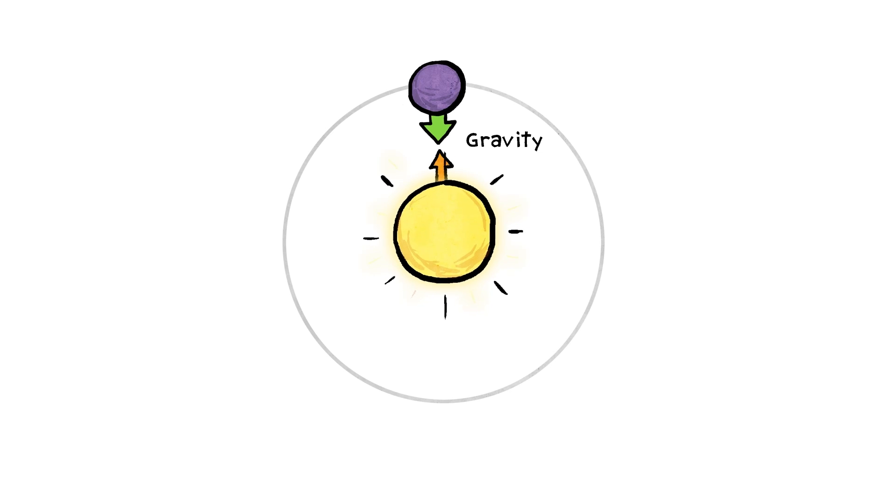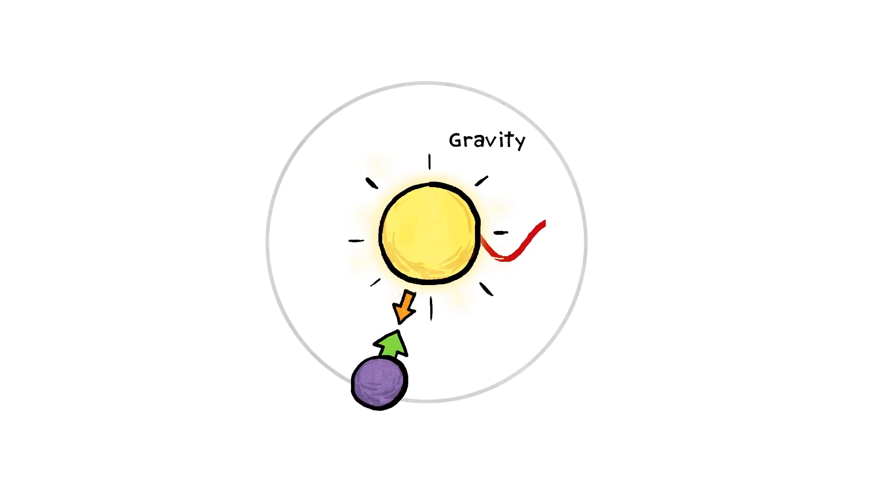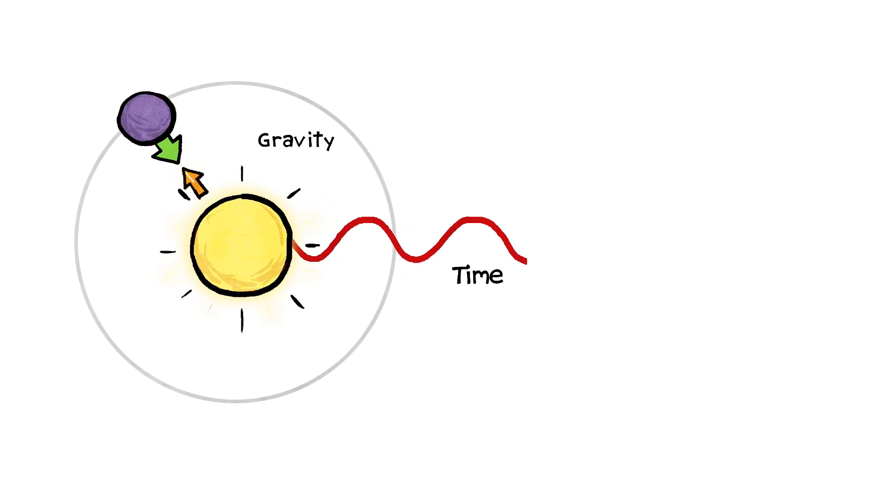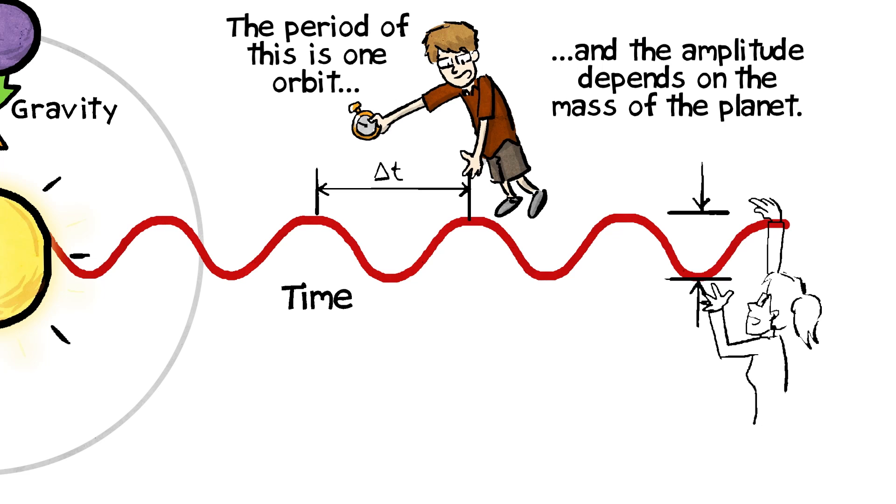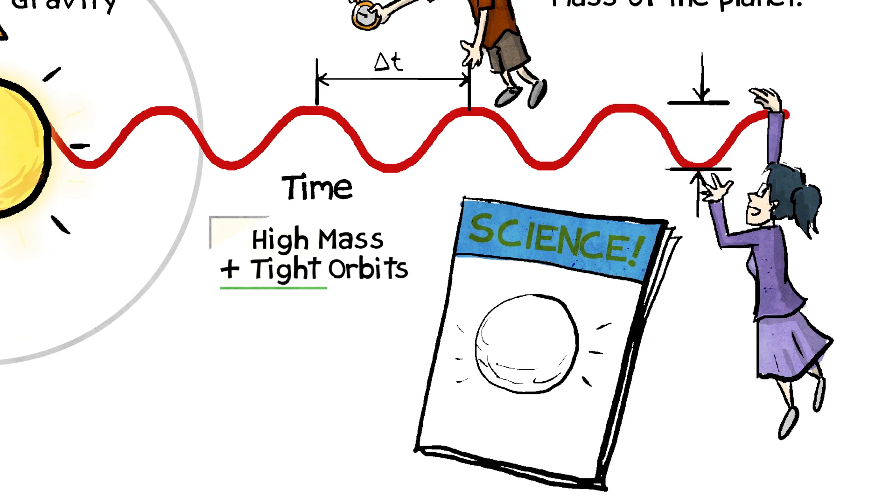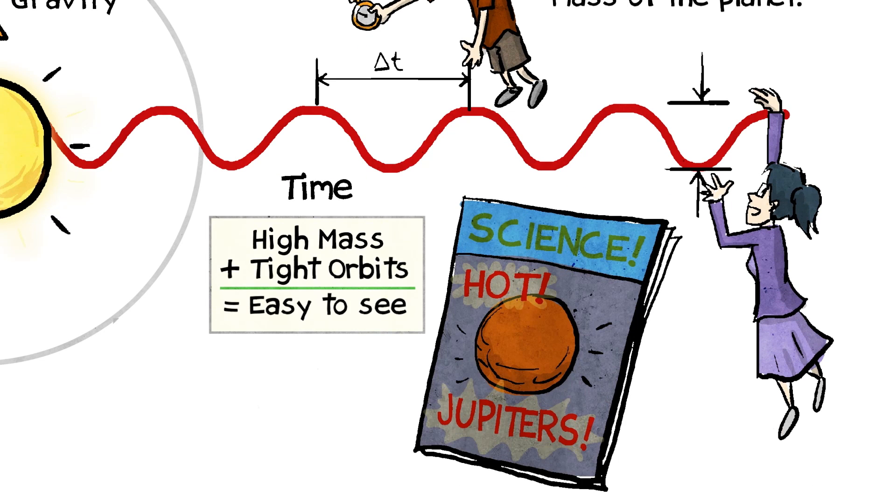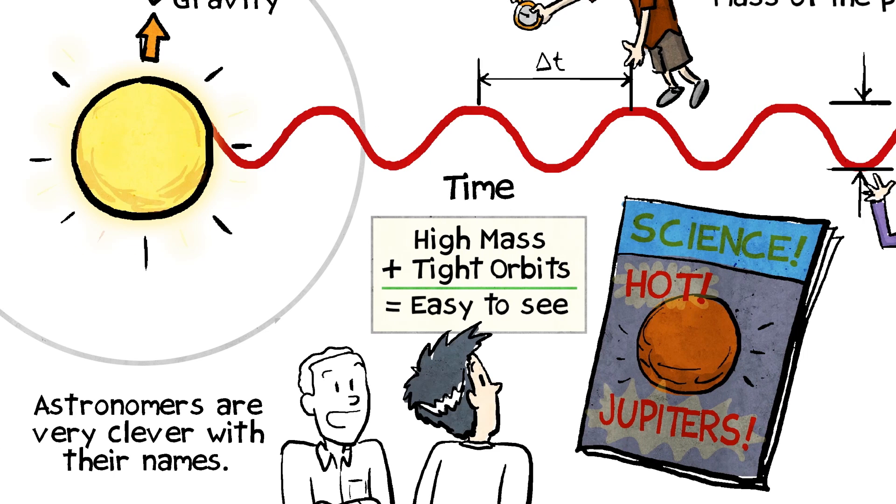You have your sun, and then orbiting around it is a planet. And when the planet is over here, because of gravity, the planet gets tugged inwards, but also it tugs the star ever so slightly inwards. And then when it orbits here, the star gets tugged over here, and same thing, same thing. The period of this is one orbit, and the amplitude, how big it is, depends on the mass of the planet. Which is why the first thing that we saw was hot Jupiters, because the astronomers are very clever with our naming.